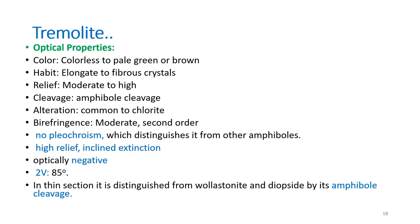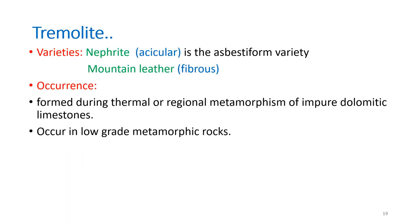Coming to the optical properties of tremolite: color is colorless to pale green or brown. Habit is elongate to fibrous crystals. Relief is moderate to high, and it has the amphibole type of cleavage. It generally alters to chlorite, and shows moderate to second-order interference colors. A distinguishing feature is that it shows no pleochroism, which distinguishes it from other amphiboles. It is optically negative with a 2V of about 85 degrees. In thin sections, it is distinguished from wollastonite and diopside by its amphibole type of cleavage. An important variety is nephrite, which has an acicular asbestiform habit; another variety is mountain leather, a fibrous variety of tremolite. Tremolite occurs during thermal or regional metamorphism of impure dolomitic limestones and in low-grade metamorphic rocks.